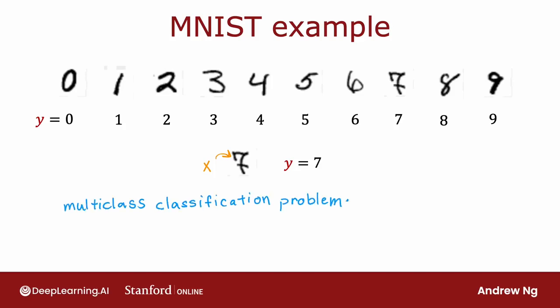So a multi-class classification problem is still a classification problem in that y can take on only a small number of discrete categories. It's not any number. But now y can take on more than just two possible values.